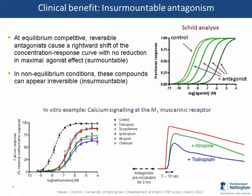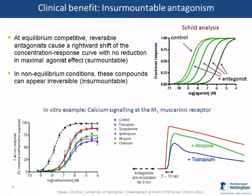Something perhaps less well known is the potential benefit for enhanced efficacy. Competitive drugs in an equilibrium situation cause rightward shifts of concentration-response curves to agonists with no reduction in maximal effect — this is surmountable antagonism, meaning enough agonist will always out-compete the antagonist. But if we return to the non-equilibrium conditions I described, this relationship breaks down and compounds can appear irreversible or non-competitive — termed insurmountable antagonism.